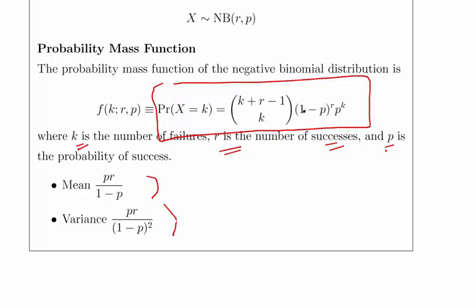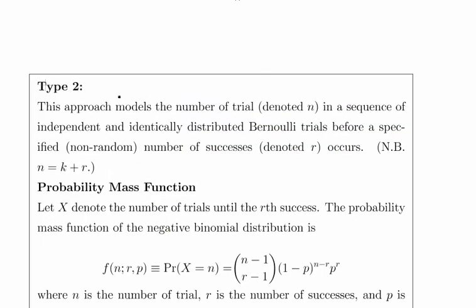It's not dissimilar from the binomial distribution - it has the same sort of structure but with slightly different coefficients. Now, Type 2: This approach models the number of trials, denoted N, in a sequence of independent, identically distributed trials before a specified non-random number of successes denoted R occurs.